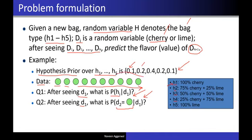After seeing the first candy, we have two problems: predict the hypothesis — that is, which bag it is — and predict the probability of the next candy being lime or cherry. These two problems are linked. If we've solved the hypothesis problem, we can solve the flavor prediction. You know the prior probability, so even without looking at a candy you have some information about the probability of the first candy. After seeing a few candies, you find the probability of the bag being H1, H2, H3, H4, or H5, and predict the next candy flavor.